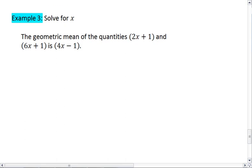How about this one? Solve for x. The geometric mean of the quantities 2x plus 1 and 6x plus 1 is 4x plus 1. Alright. Again, pull out your geometric mean. Set that on one side squared. And then it equals the two other quantities multiplied together.